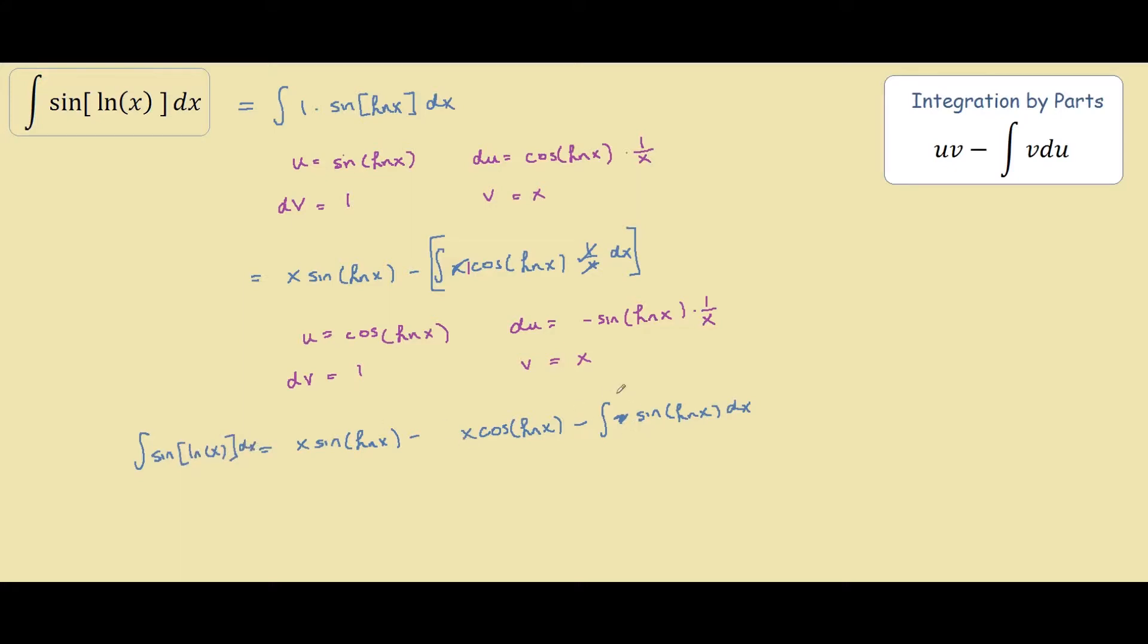And as you can see we have two integrals that look the same. So all we do is basically from basic arithmetic we bring this sine of ln of x to the other side. So we have two. Now we can just divide both sides by two.